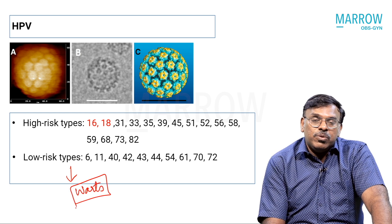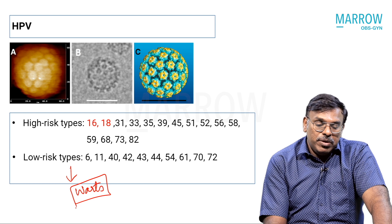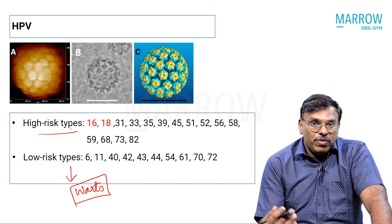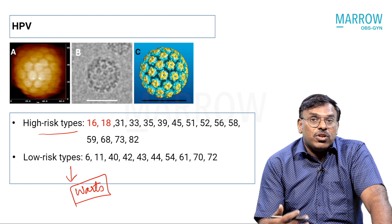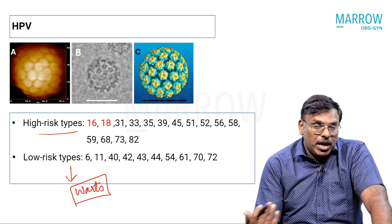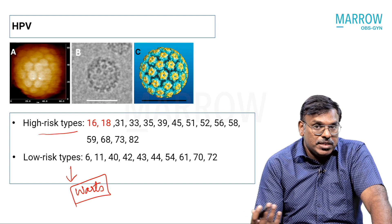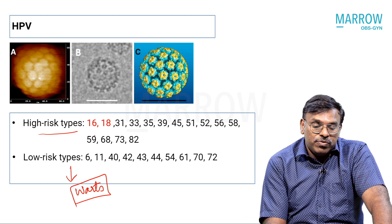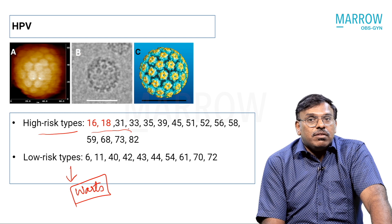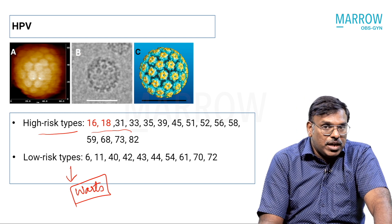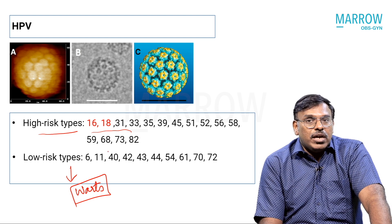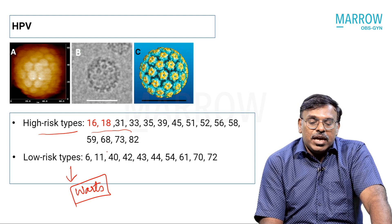What we are more concerned about are the high-risk types, where once an HPV infection does not get cleared from the body by immune mechanisms, and the infection persists — if it is one of these high-risk types — then there is a risk of development of pre-invasive cancers and then the final invasive cancer lesions.